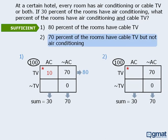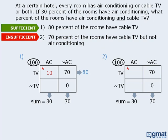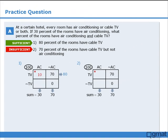Now on to statement 2. Here we are told that 70% of the rooms have cable TV but not air conditioning. This box is reserved for rooms with cable TV but not air conditioning, and we already knew that this box contains 70 rooms. Since statement 2 does not provide any new information, it cannot be sufficient, which means the answer is A.